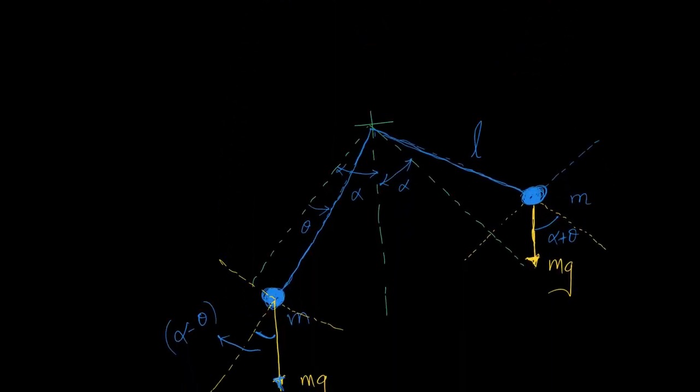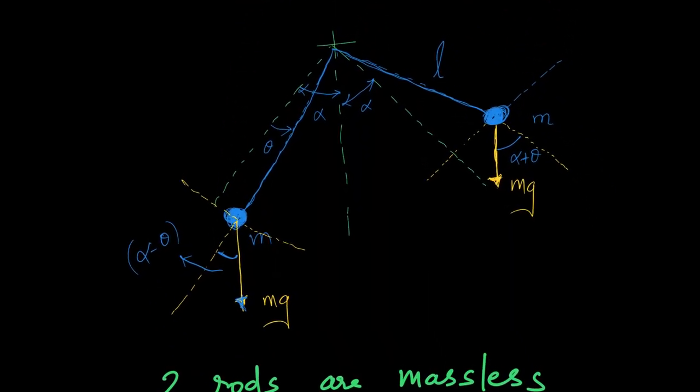Then we can use Euler's equation or in other words you can say Newton's equation or whatever. To be very precise we should call it the Euler's equation because Newton did all his laws and everything for particles and Euler took it to rigid bodies.